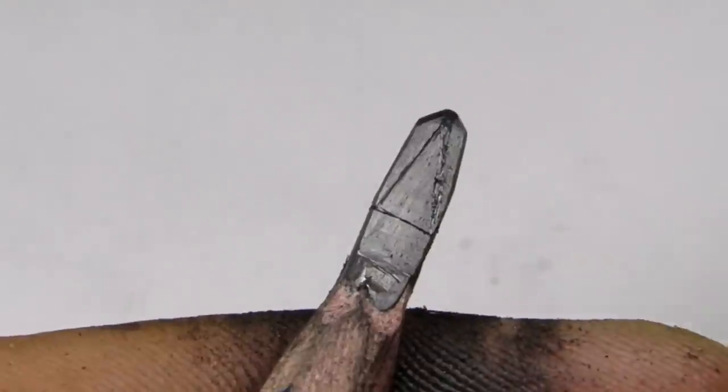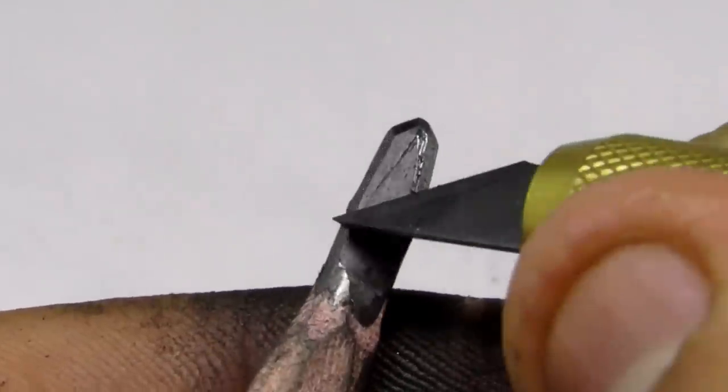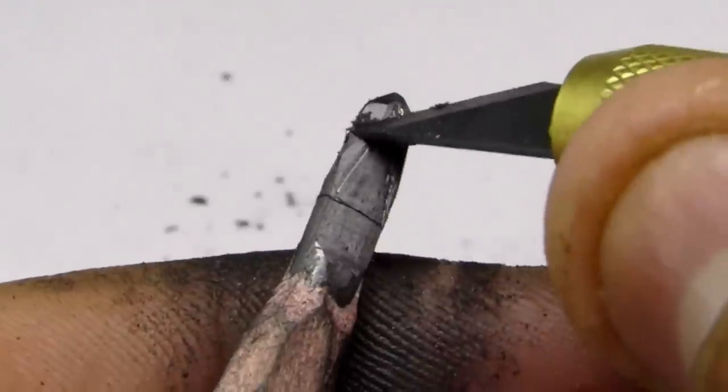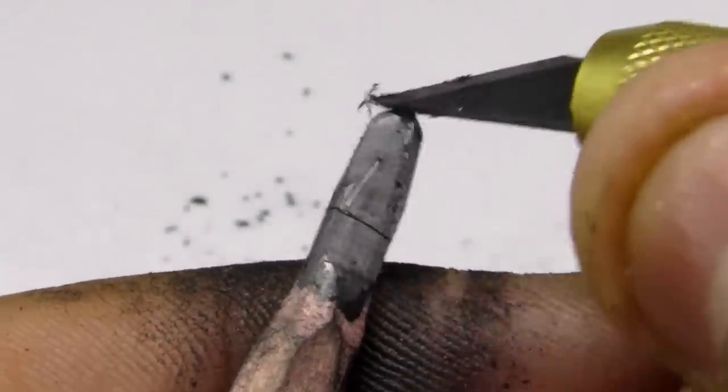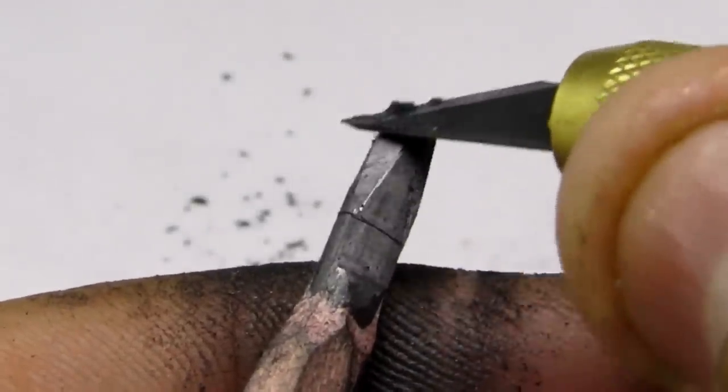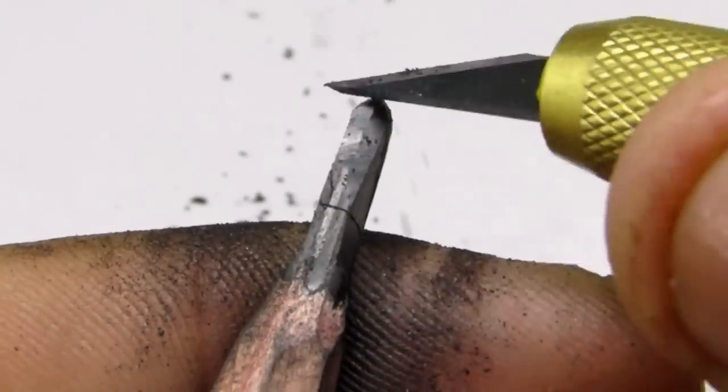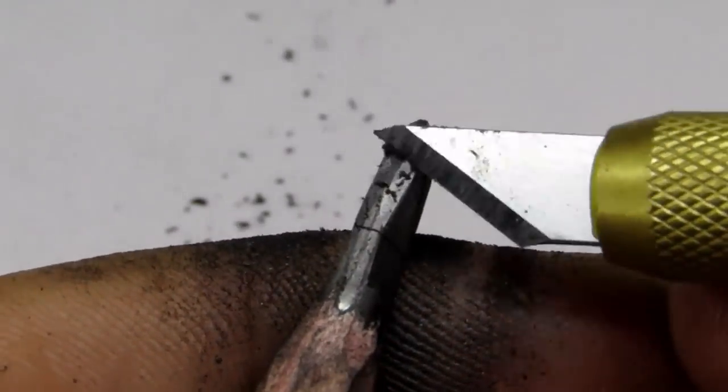As the outline is ready, now I'm gonna carve this extra lead which is outside this outline. Make sure you do everything slowly because the graphite is a brittle thing and it will break if you try to remove larger chunks in a short time. You have to remove the extra graphite slowly and layer by layer by rubbing the blade on the surface.